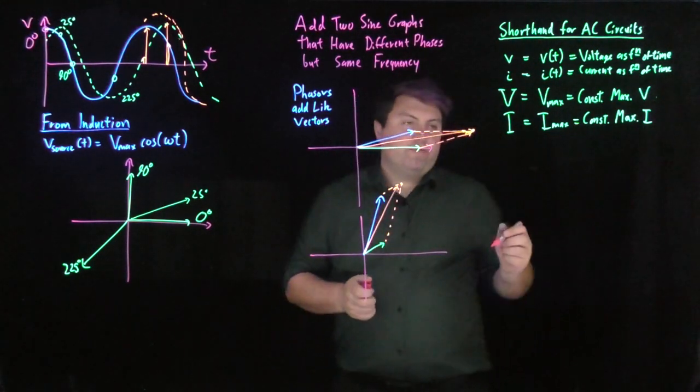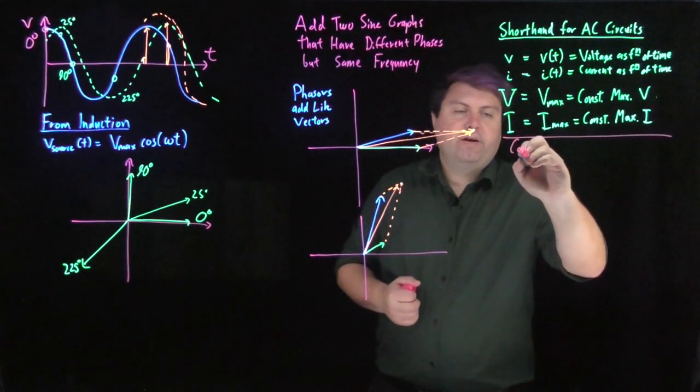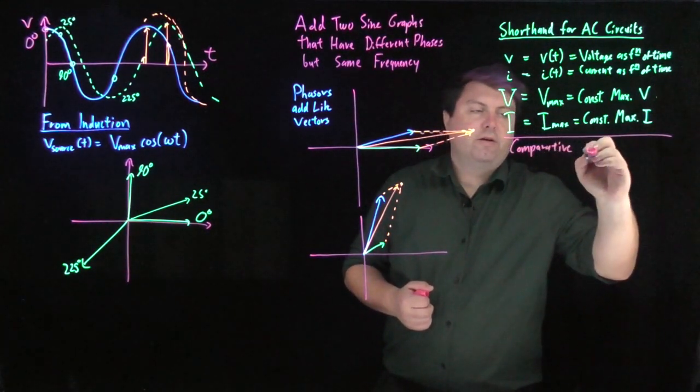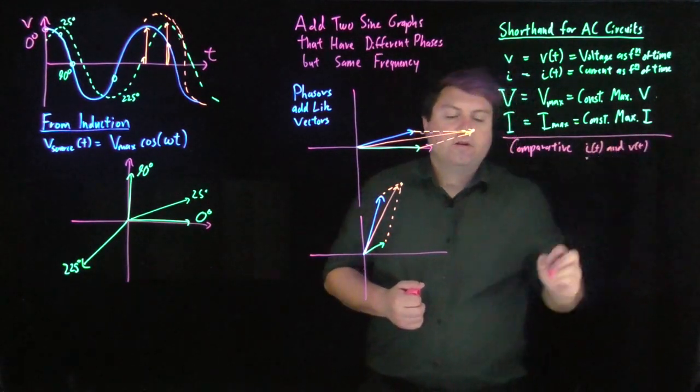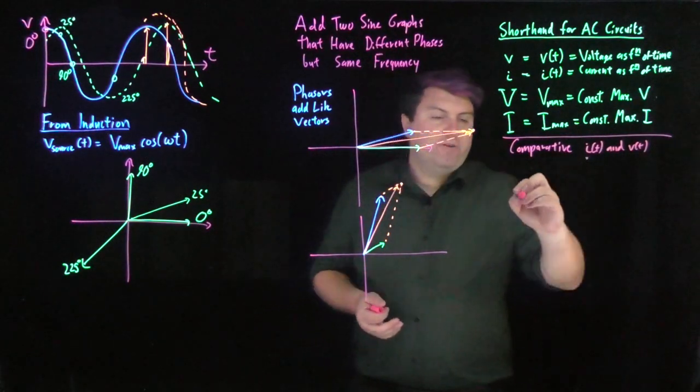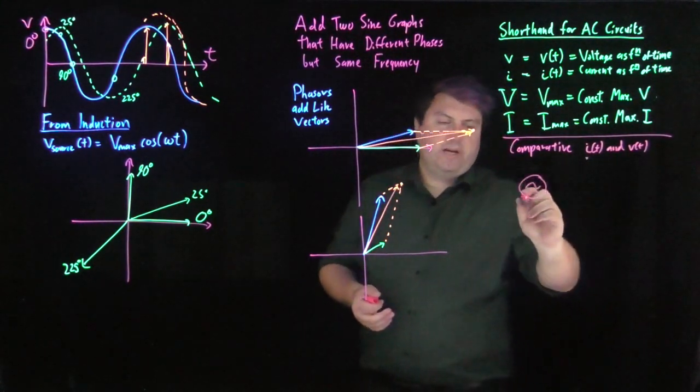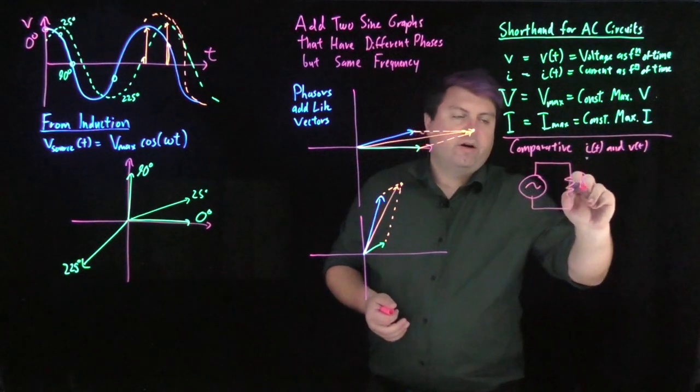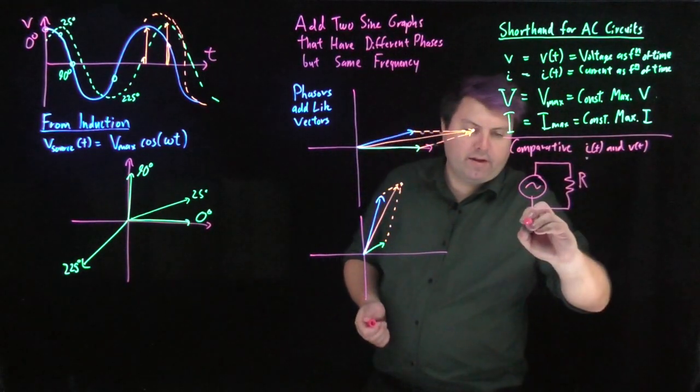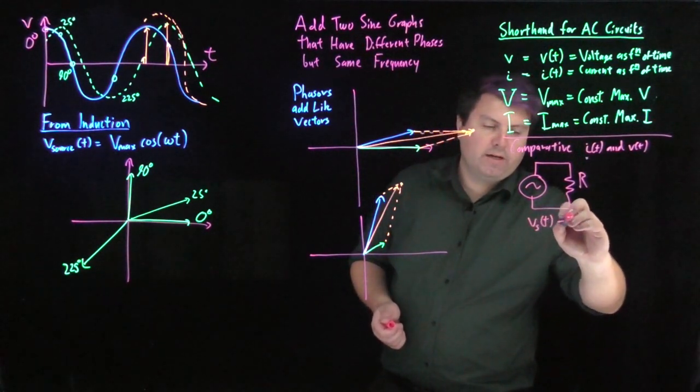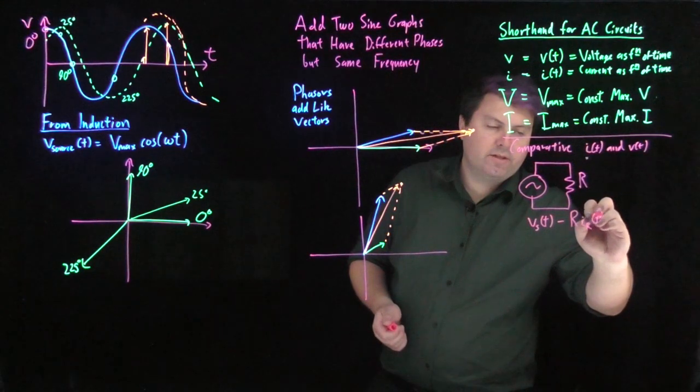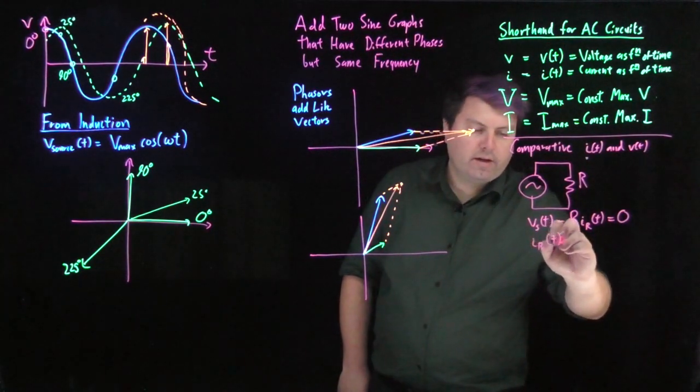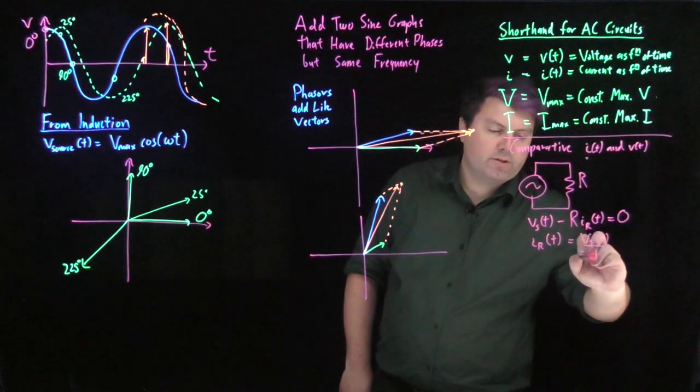So one example of the phasers that we can do is we can also show comparative current I of t and V of t. So let's take a look at a trivial-ish example of an AC source. We're going to represent an AC source as a little sine wave inside of a circle and a resistor R. So with our loop rule, we have that the voltage of our source as a function of time minus R times the current over a resistor as a function of time is equal to zero.